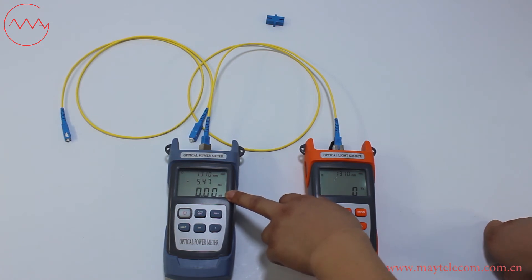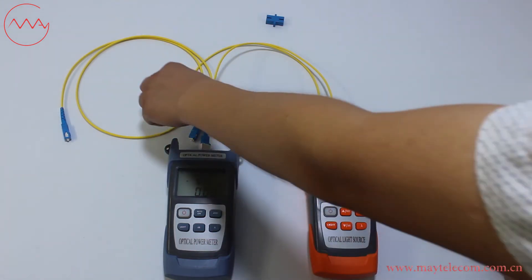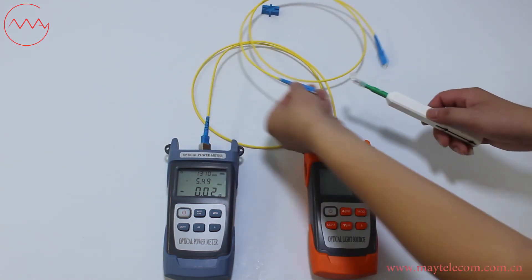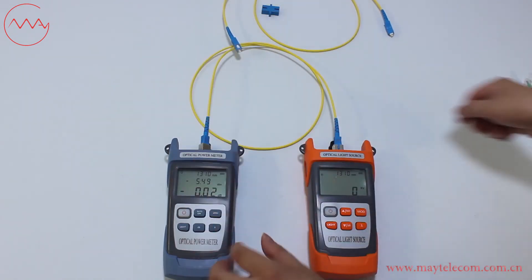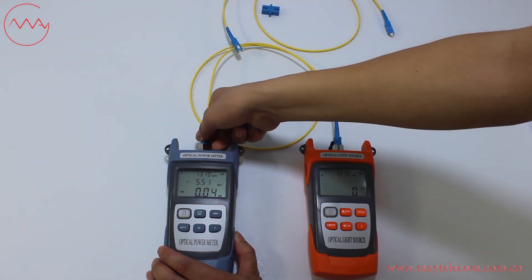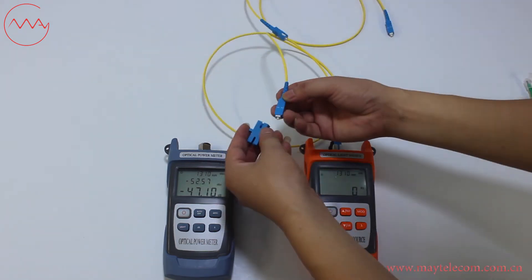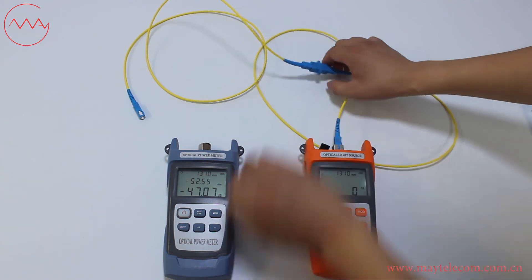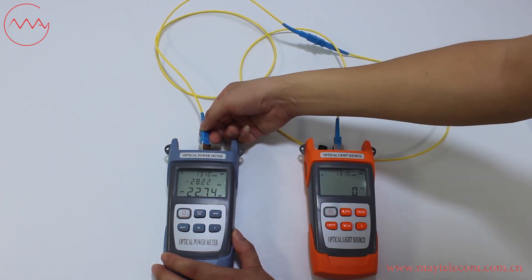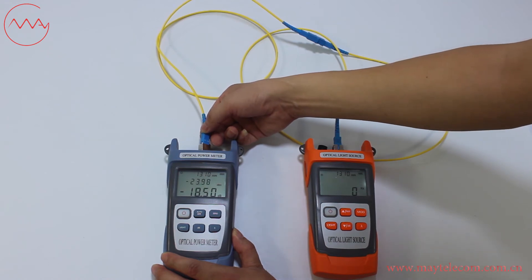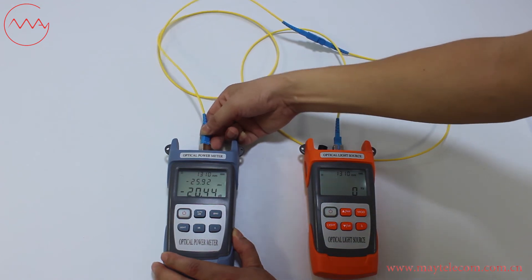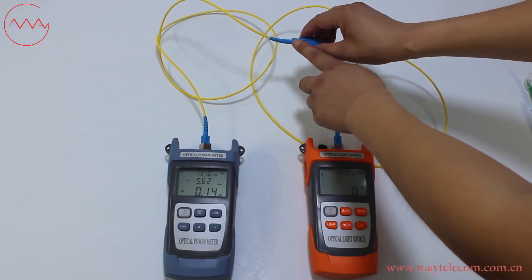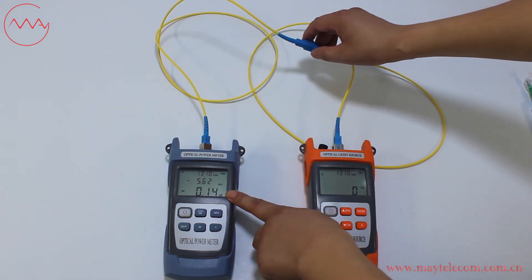Connect the reference patch cord between the optical light source and the optical power meter. Press the dB button to show relative power — it shows 0 dB. Clean the patch cord under test. Disconnect the reference patch cord from the optical power meter and connect the other end of the patch cord under test. Then connect the other side of the patch cord under test to the optical power meter. The insertion loss of this connector of the patch cord under test is 0.14 dB.